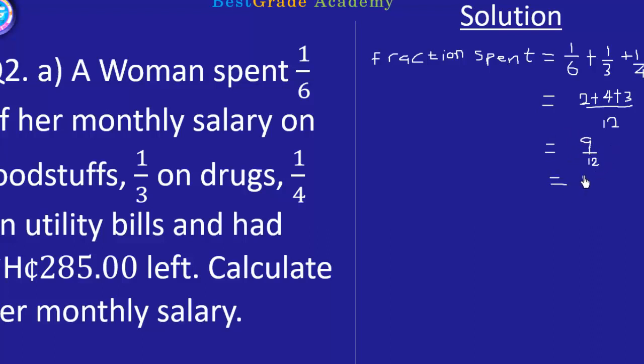All this will give us 9/12 and this is equal to 3/4. So we need to calculate for the fraction that is left. Fraction left will be equal to 1 minus the fraction spent, which is 3/4.